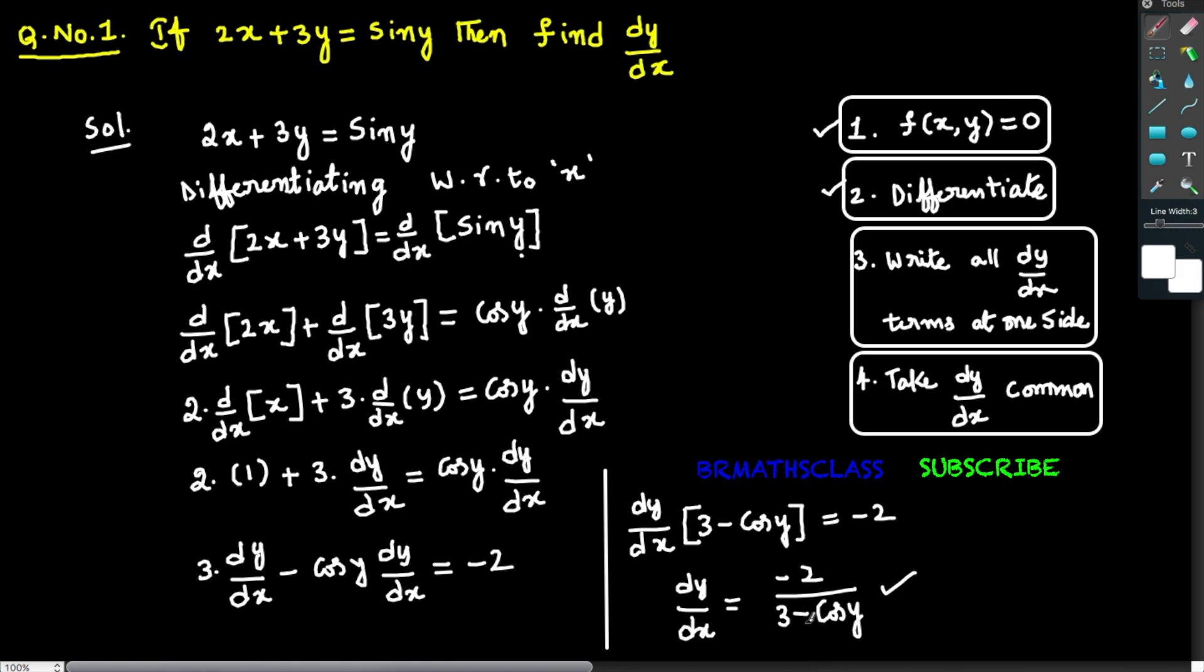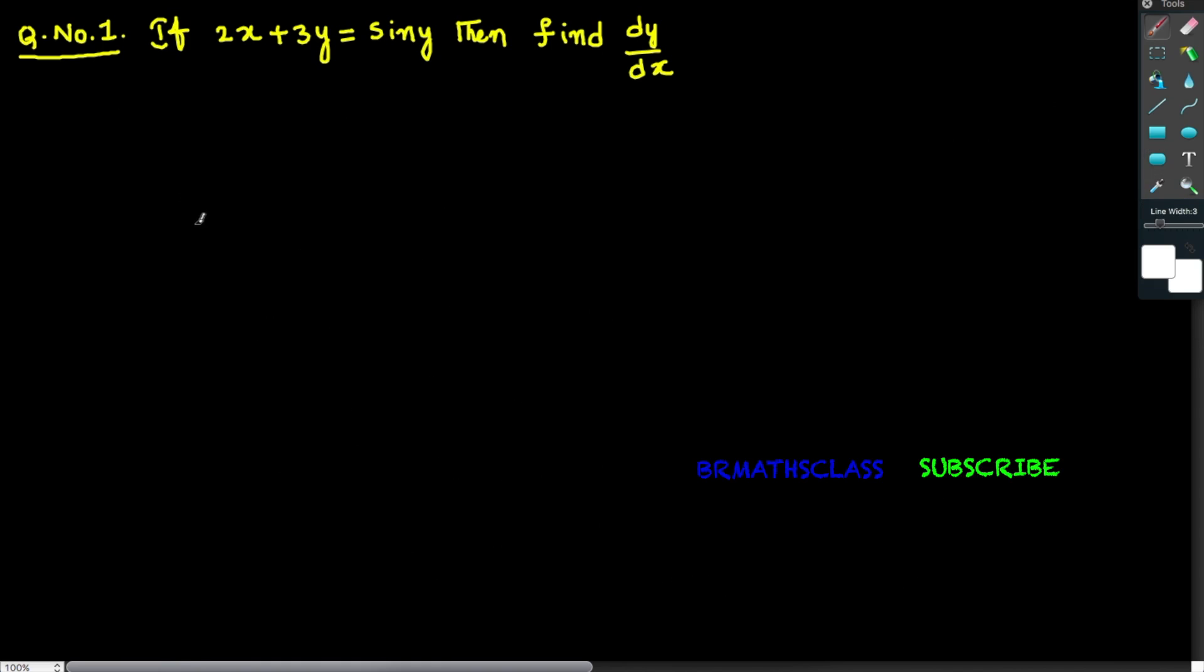If 2x plus 3y equals sin y, then find dy by dx. There is a procedure to find dy by dx from implicit function. First you identify given function is an implicit function.